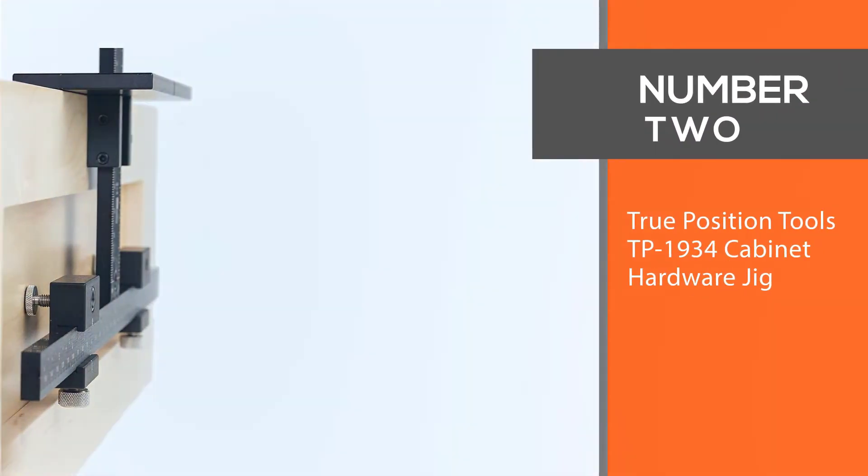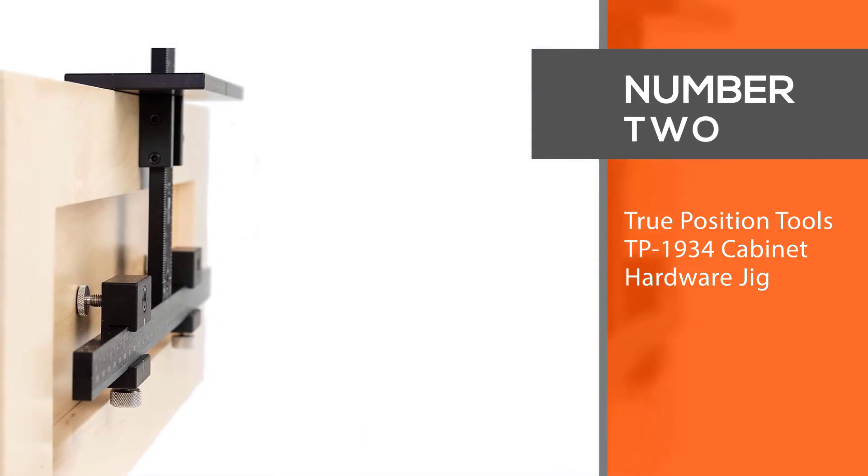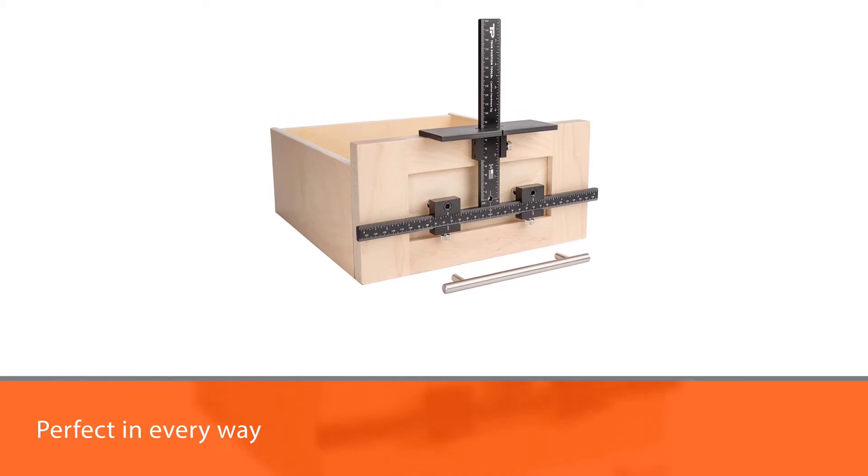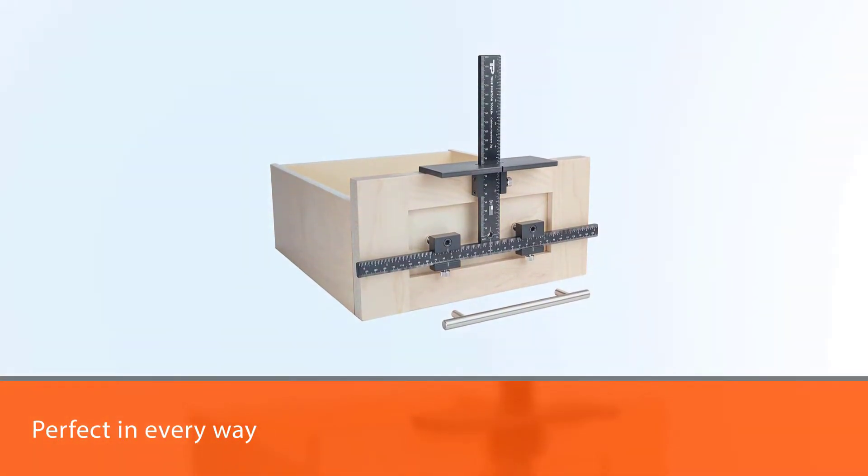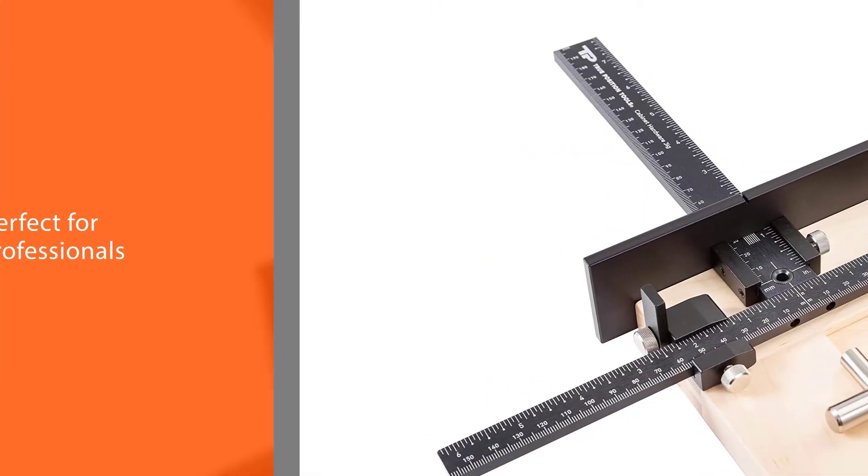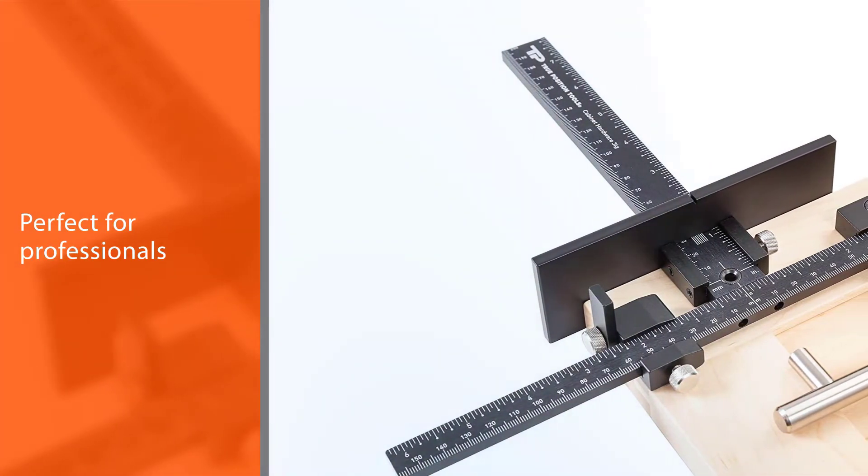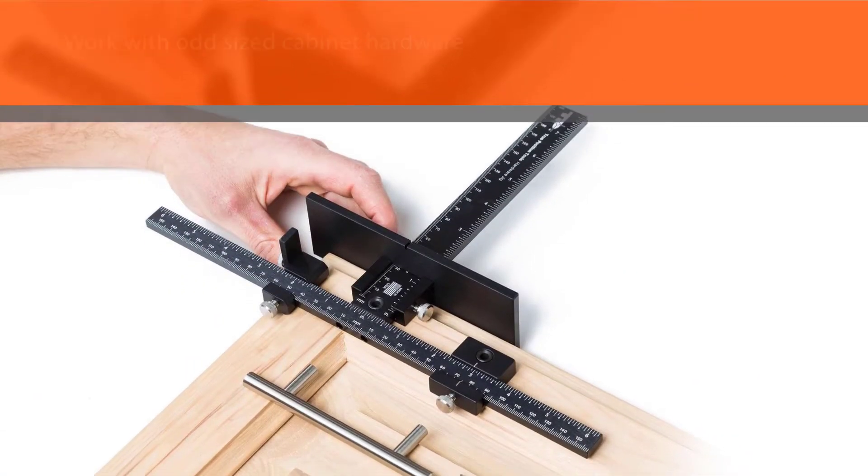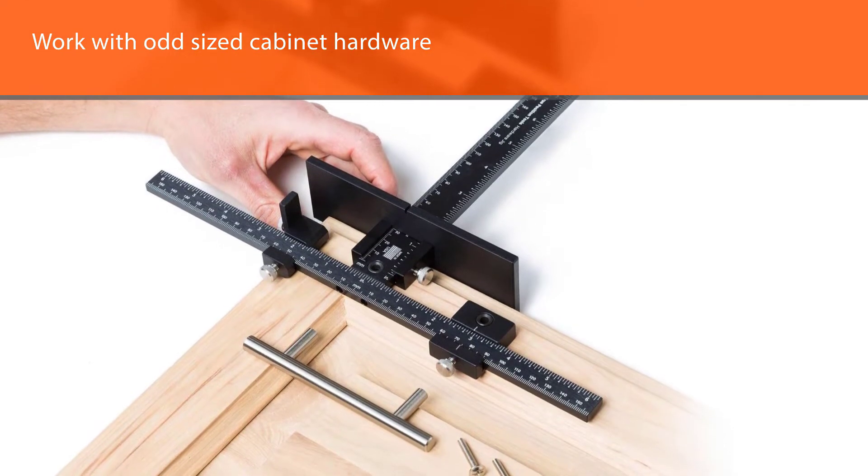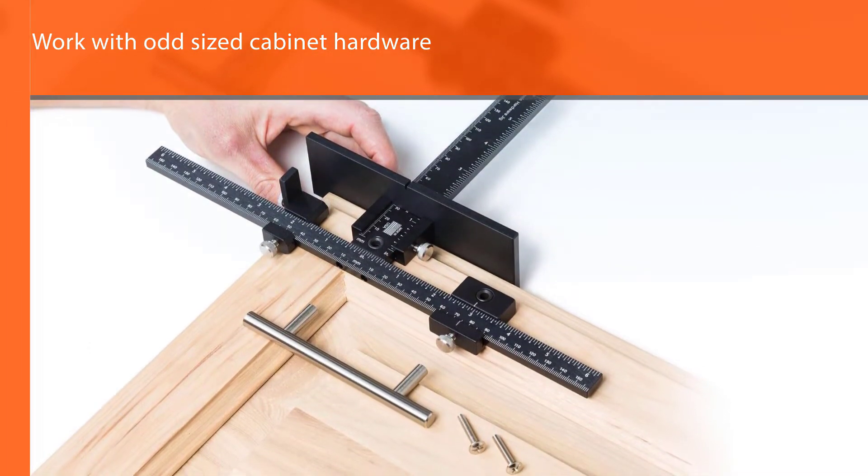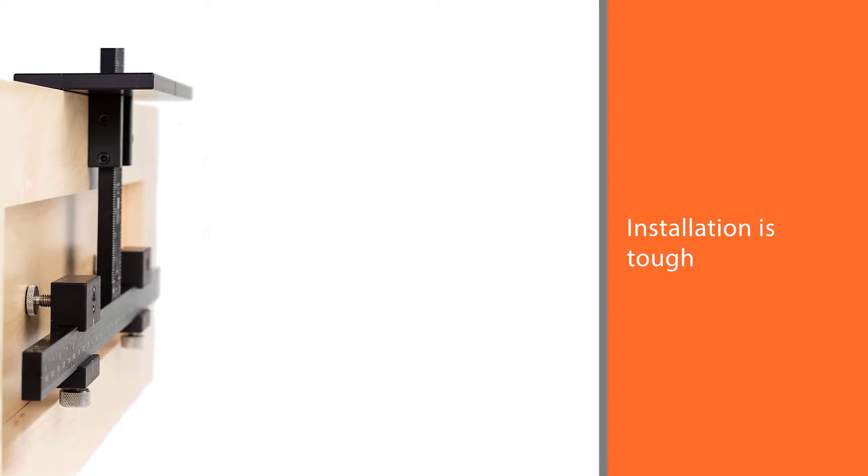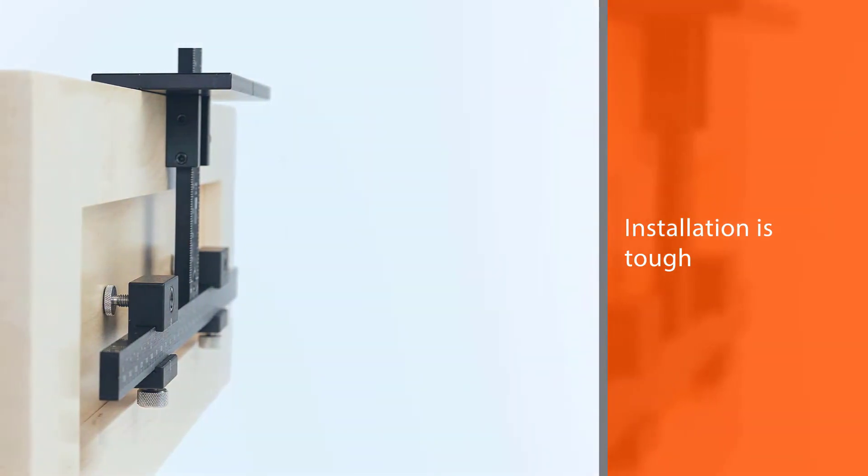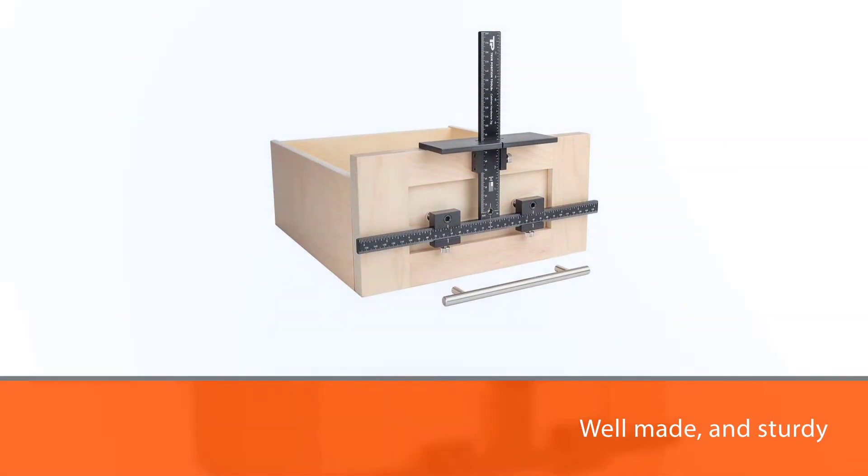Number two: True Position Tools TP1934 Cabinet Hardware Jig. This cabinet hardware jig is the only tool that can rival Kreg Tools product. It's perfect in every way, whether you run your own remodeling company or looking for an installation tool to do your hardware installation work. This will be the only tool you will ever need. It's also perfect for professionals that work with odd-sized cabinet hardware. It is better than most plastic templates on the market. This installation is tough, well-made, and sturdy. It will last years in the hand of a professional renovation contractor.